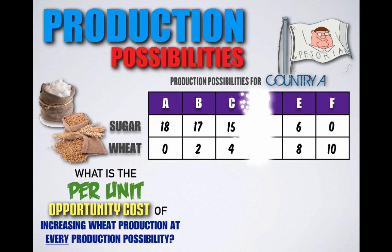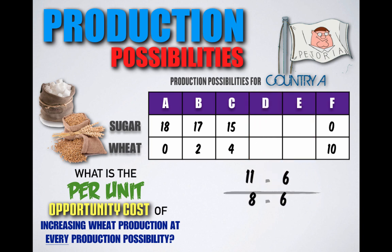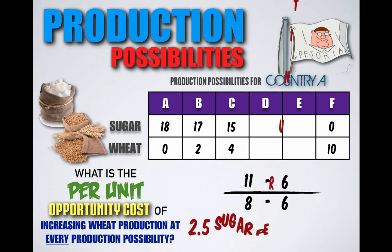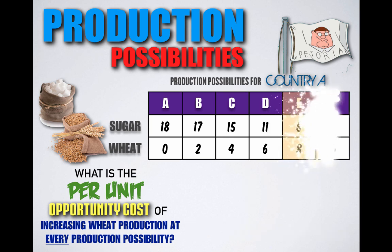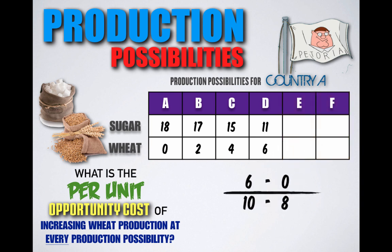In shifting production from combination D to combination E, Petoria decreases sugar from 11 units to six units but increases wheat from six to eight units. Petoria gives up five units of sugar but gains two units of wheat, so for every unit of wheat gained, Petoria gives up the potential to produce two and a half units of sugar. Shifting from E to F, Petoria decreases sugar from six units to zero but increases wheat from eight to ten units — losing six units of sugar but gaining two units of wheat means the per unit opportunity cost is three units of sugar.